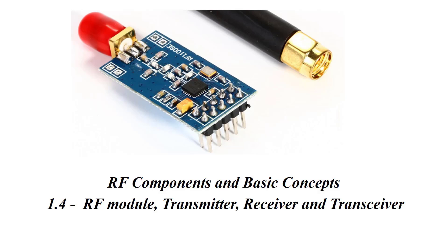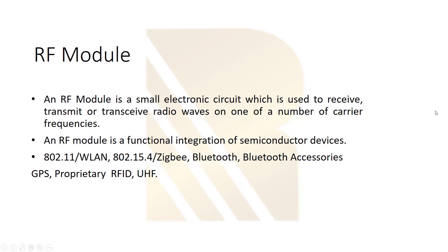In this section we are going to explain what is an RF module, transmitter, receiver, and transceiver. An RF module is a small electronic circuit which is used to receive, transmit, or transceive radio waves on one of a number of carrier frequencies. The data which is sent or received has a carrier frequency.